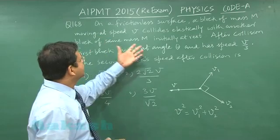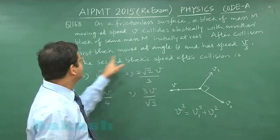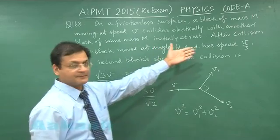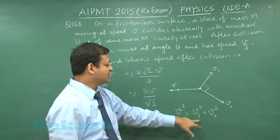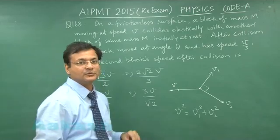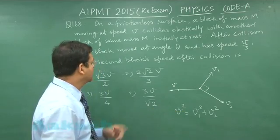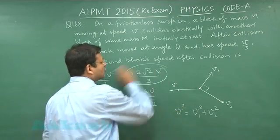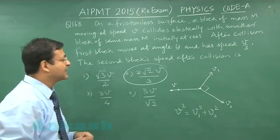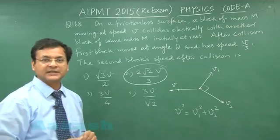Here the initial velocity is V, and V₁ has been given as V/3. You are supposed to calculate V₂. Simply applying Pythagoras, you get the answer 2√2 V/3. This is the simple expression for question 168.